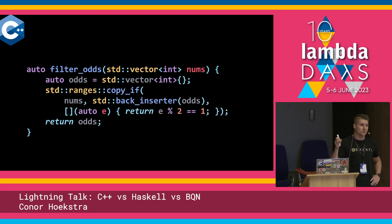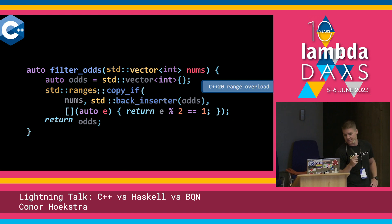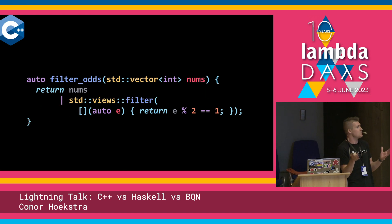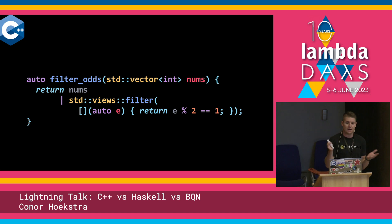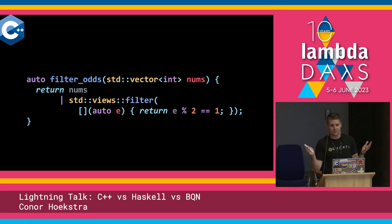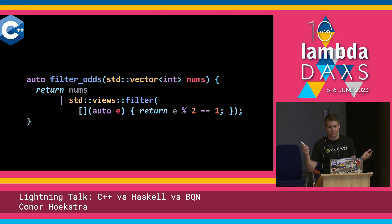This is a lot nicer. Also in C++20 we got C++20 ranges, which is kind of inspired by stream fusion and other libraries like Haskell and Java 8 streams. So basically we can now make a call to a function called filter, pass it a lambda that checks if it's odd, and then we're done.